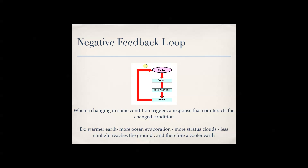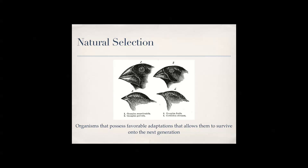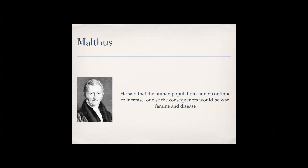Natural selection is when organisms select other organisms that are strong and can survive and adapt to their surroundings, so they can survive to the next generation. It's basically a process of continually getting better and choosing the best of the best to survive and adapt to their surroundings.